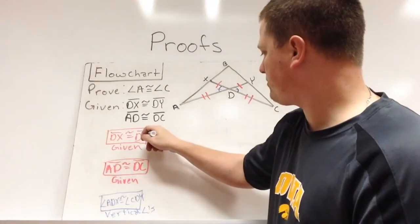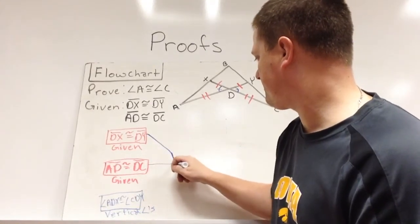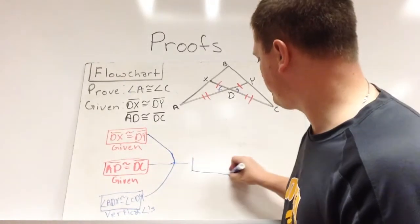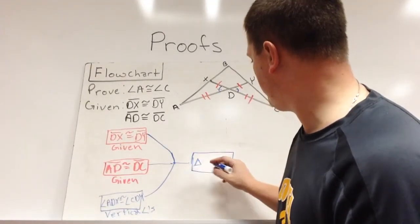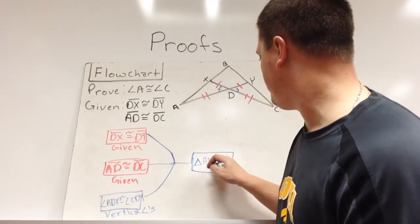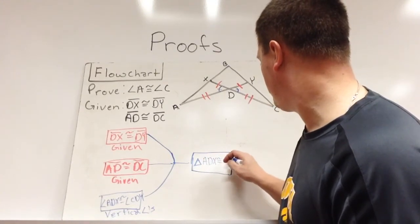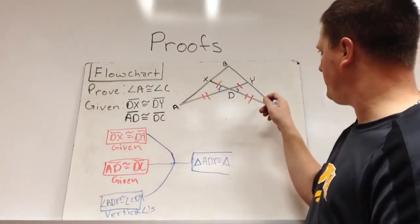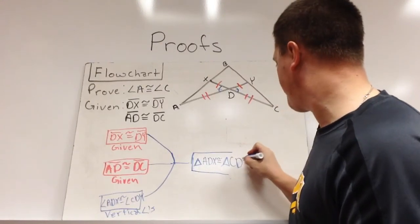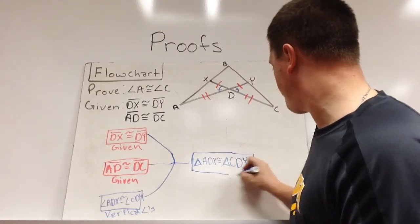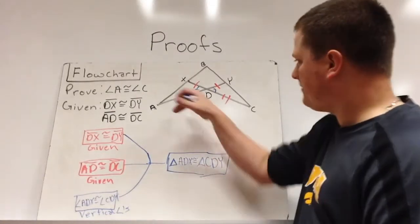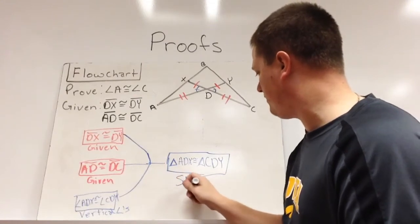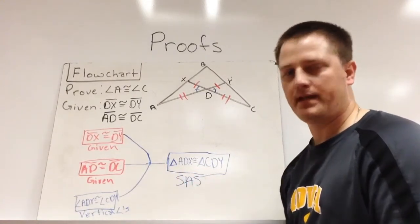Well, these three things together make the triangles congruent. So triangle ADX is congruent to triangle CDY. And they're congruent because we have side, angle, side. So SAS congruency there.